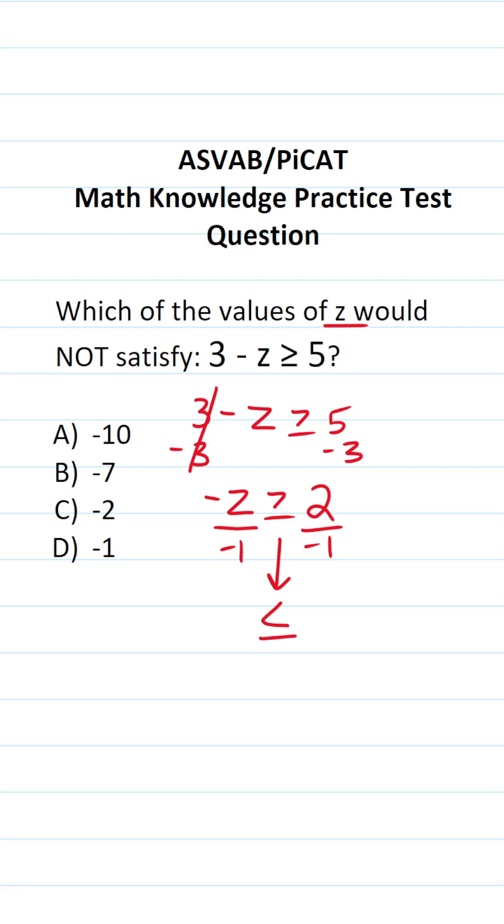Negative z divided by negative 1 is z. Negative divided by negative is a positive. 2 divided by negative 1 is going to be negative 2. So our solution to this one, we read it like this: z is all the values that are less than or equal to negative 2.